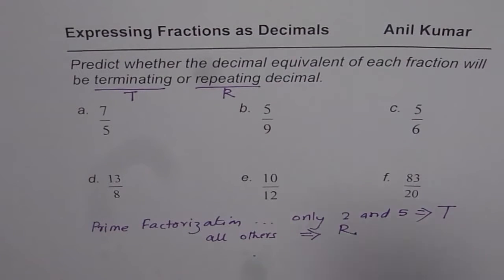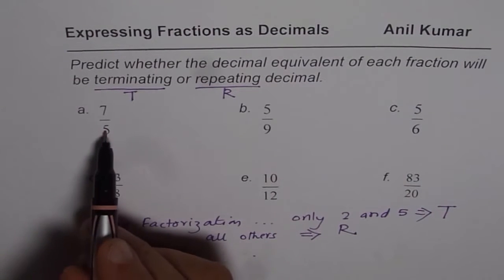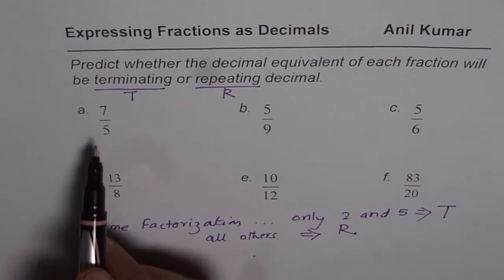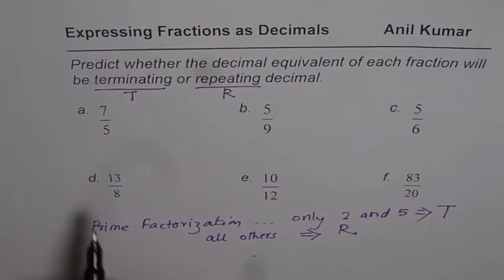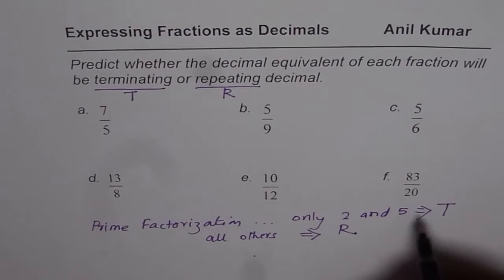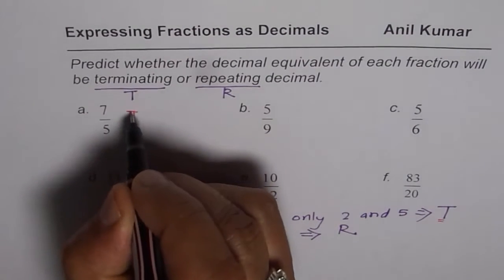So what you can do is, you can do prime factorization. Now 5 in our case is itself a prime number. So it has only one prime factor, which is 5. So in this case, it should be terminating. So we'll write T for terminating.